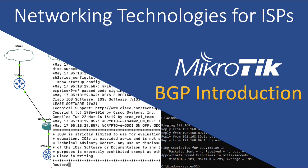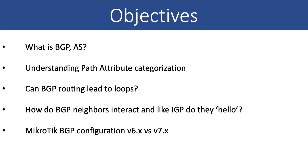Hey everyone and welcome to today's video. Today we are going to be learning about BGP. This is going to be a fundamental BGP session and we are going to be looking at what is BGP, the fundamental building blocks of BGP including path attribute categorization, whether BGP routing can lead to loops, how BGP routers interact with each other, and finally IPv4 configuration in RouterOS V6 and RouterOS V7.